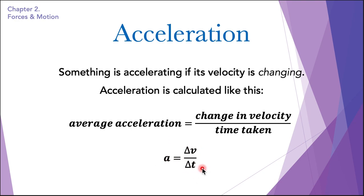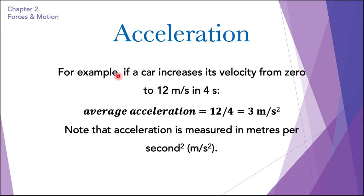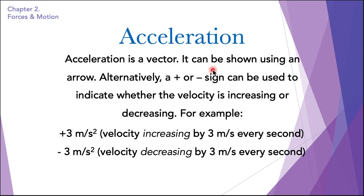We can make a triangle for this equation as well: place change in velocity on top and average acceleration and time taken at the bottom. To find change in velocity, multiply average acceleration by time taken. To find time taken, divide change in velocity by average acceleration. The average acceleration equals 12 divided by 4, which is 3 meters per second squared. Note that acceleration is measured in meters per second squared. Acceleration is also a vector quantity and can be shown using an arrow, or with a plus or minus sign to indicate whether velocity is increasing or decreasing.